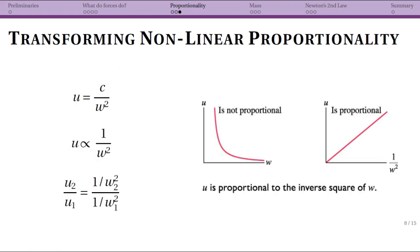Now there's one more mathematical technique that will be really useful later in physics even though we don't need it right now and that is actually transforming a nonlinear proportionality. So in this case, I have u and w related where instead of it being really simple, you have w on the bottom and it's squared.